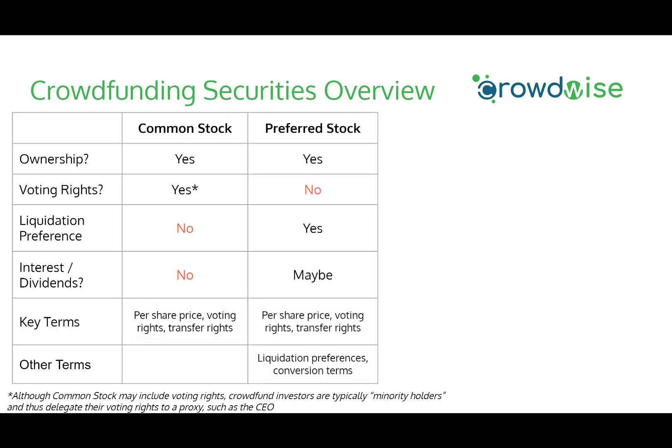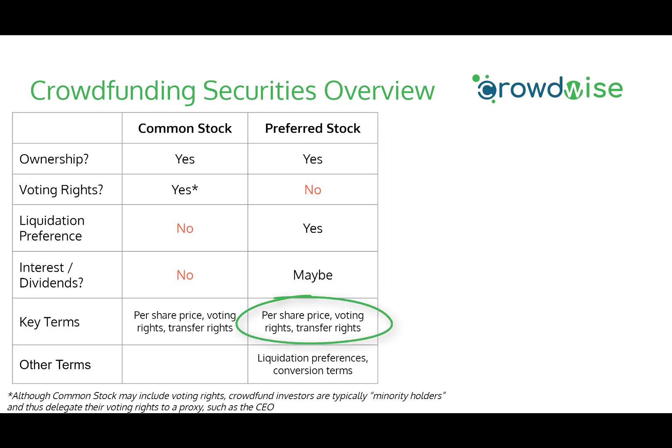Comparing this with preferred stock: preferred stock is also equity ownership but does not usually have any voting rights. The trade-off is that preferred stock — typically held by outside investors — usually includes liquidation preferences. In terms of dividends, while preferred stock has a higher claim, it's still very rare for an early-stage company to pay dividends. Key terms include price per share, voting and transfer rights, and other terms to look out for include liquidation preferences and conversion terms.